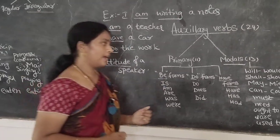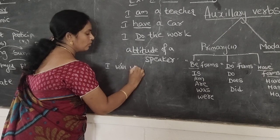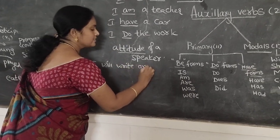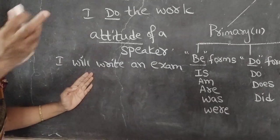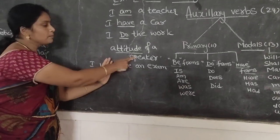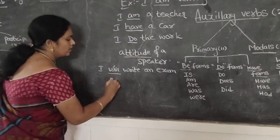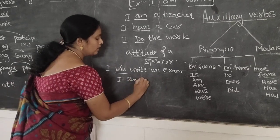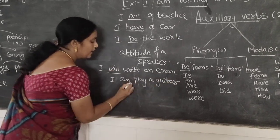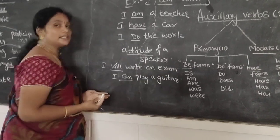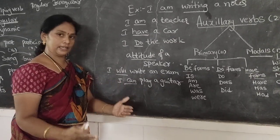For example, if you write: I will write an exam. Here your attitude is that you are going to write an exam. The speaker is expressing a future thing — that is will. Coming to another example: I can play a guitar. That means I have an ability to play the guitar. That is my mood — I can do it. So a modal expresses the attitude of a speaker.